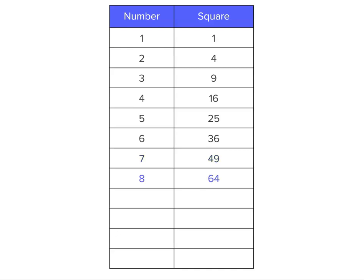We've got 8 and 64. So the square of 8 is 64. So it's like your times tables, but it's just special ones where the number's multiplied by itself. The square of 9 is 81. The square of 10 is 100.